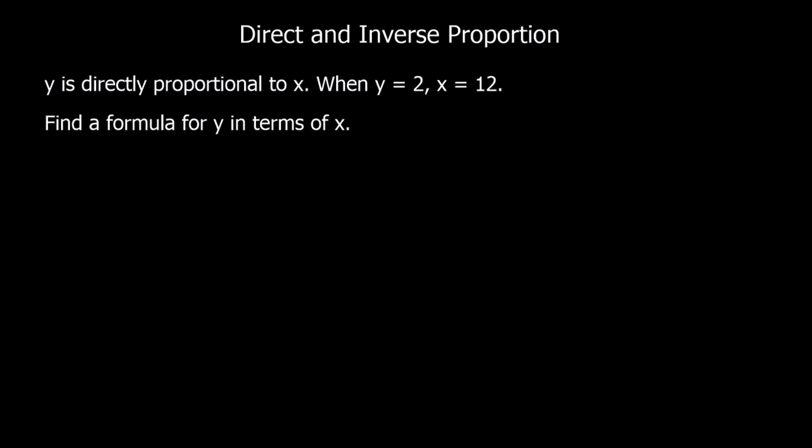This question says y is directly proportional to x. When y is 2, x is 12. Find the formula for y in terms of x. So a directly proportional relationship is in this form, y equals kx. It's a multiplier relationship. To get y, we get x and multiply it by this number. We have to work out what the number is first, but for now it's just called k.